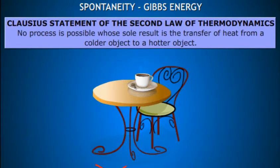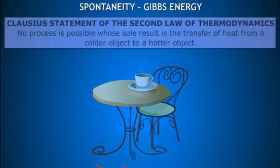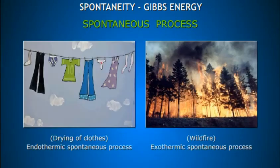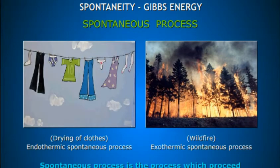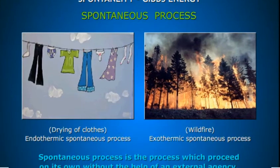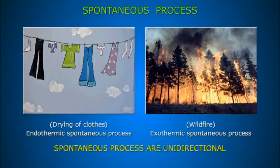We may conclude that processes are restricted to certain directions only. To understand this point, we should get an idea about spontaneous processes. A spontaneous process is one which proceeds on its own without the help of an external agency. It is worthy to note that spontaneous processes are unidirectional. We shall try to formulate a reasoning for this unidirectional property of spontaneity.